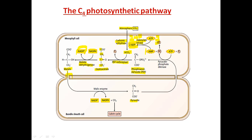Plasmodesmata are bridges between two tissues. The malate is transported by diffusion gradient through plasmodesmata to the bundle sheath cells, where malic enzyme and NADP+ help convert malate into carbon dioxide and NADPH. This released carbon dioxide then enters the Calvin cycle.